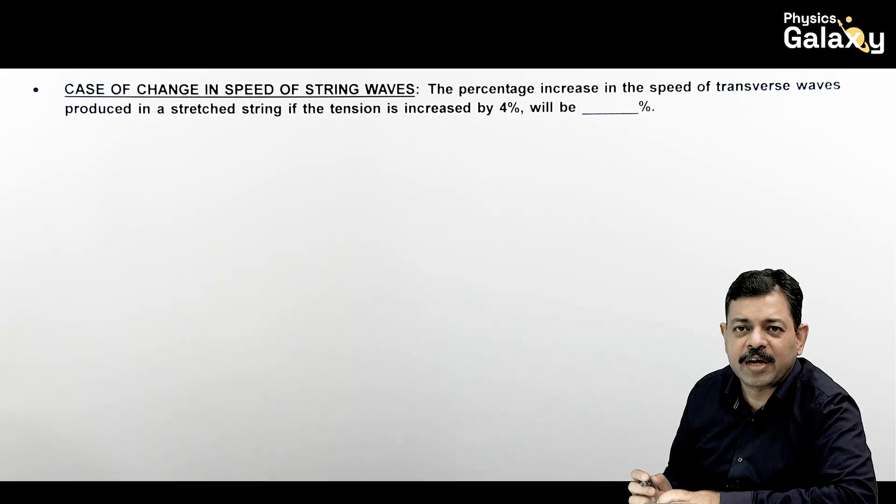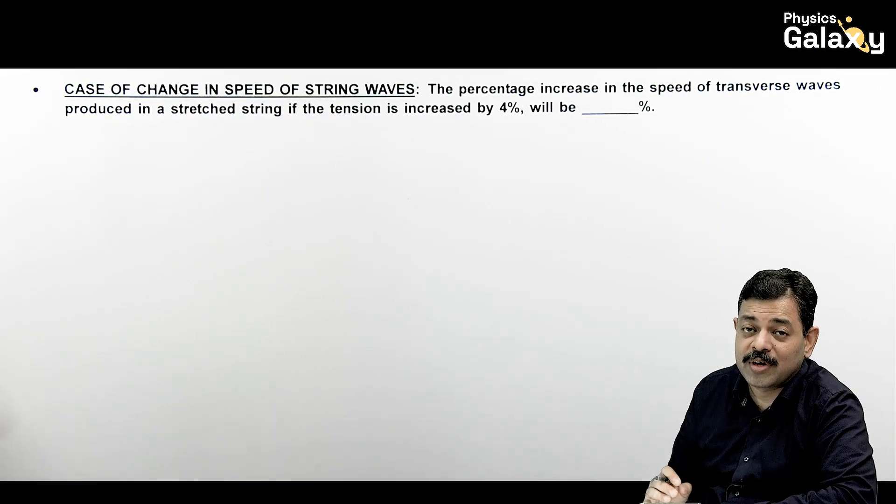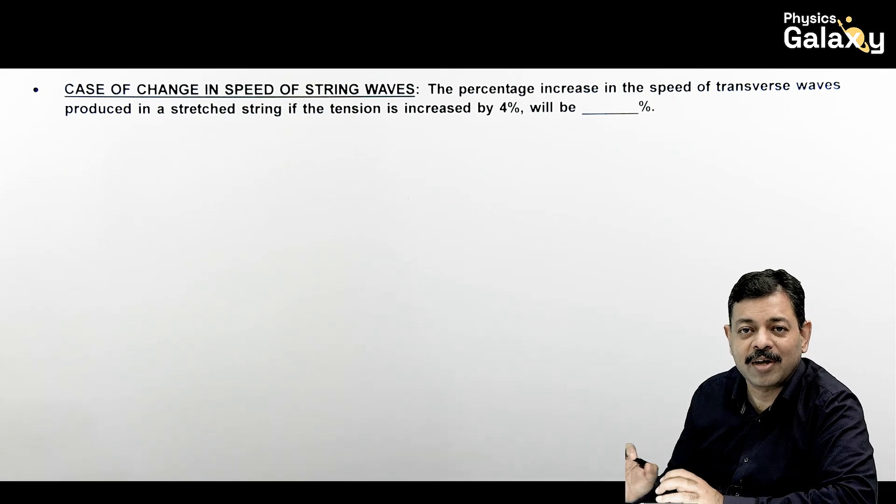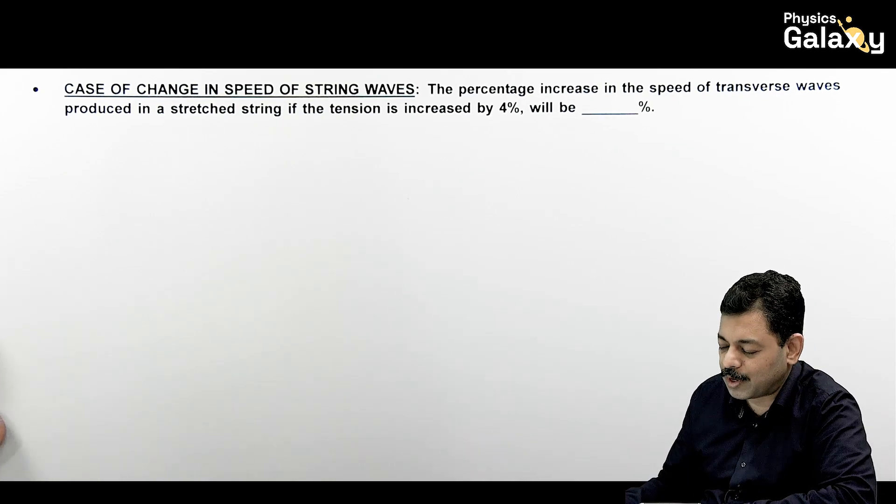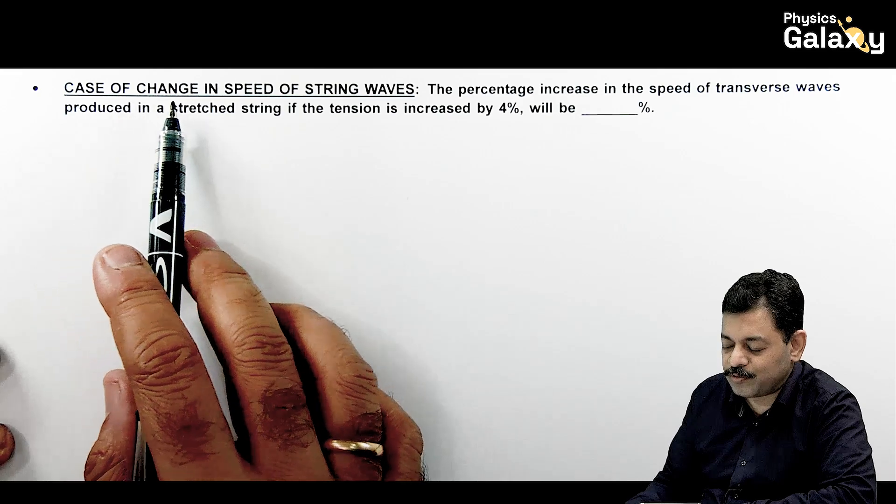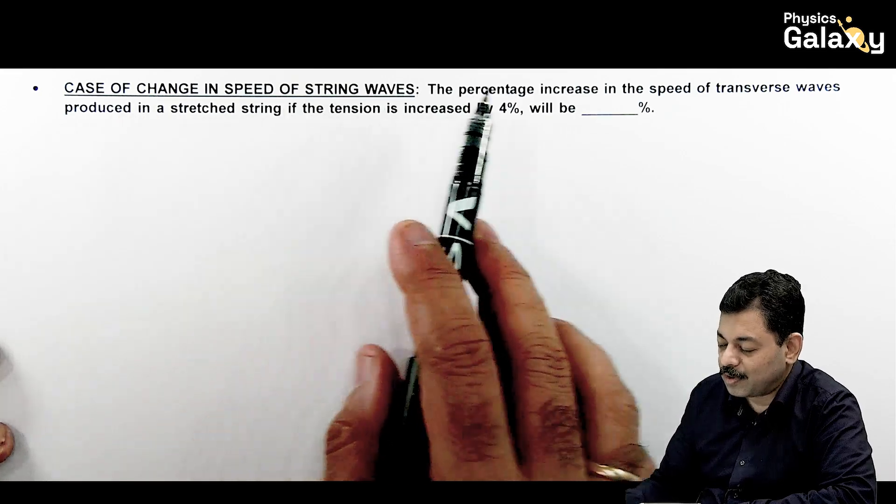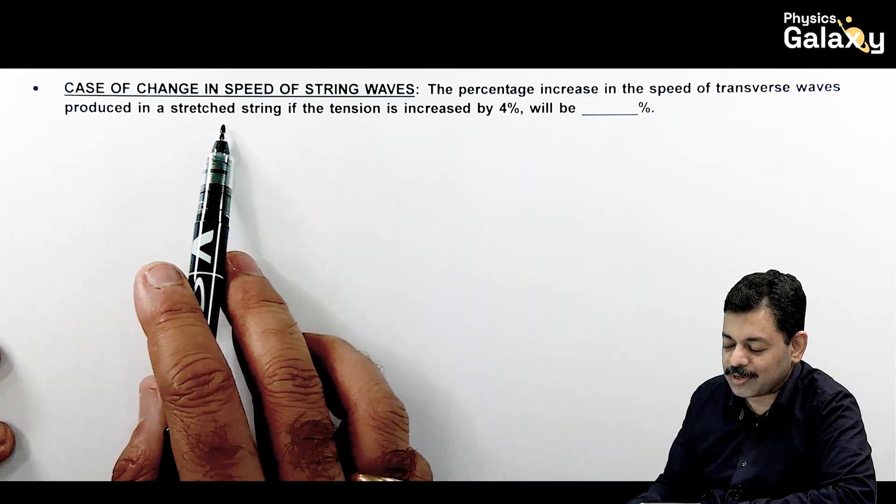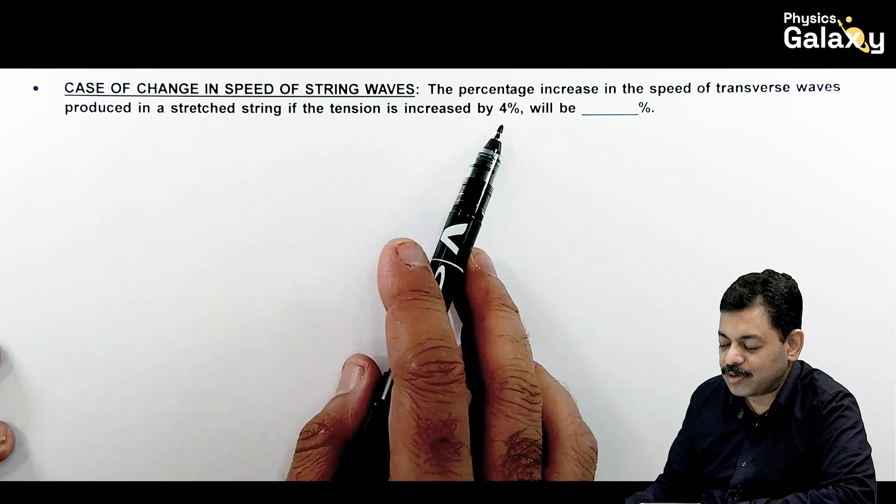Thank you. Another different type of case, but yes, I would say that waves have a lot of variety. But these things are fundamental level. We will connect with them. It says case of change in speed of a string wave. The percentage increase in the speed of transverse wave produced in a stretched string when the tension is increased by 4%.